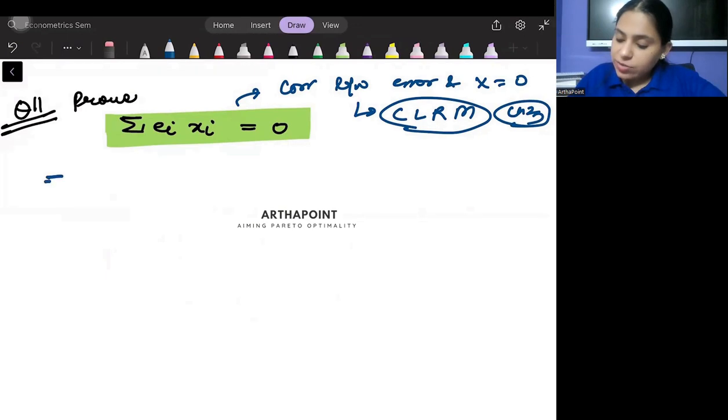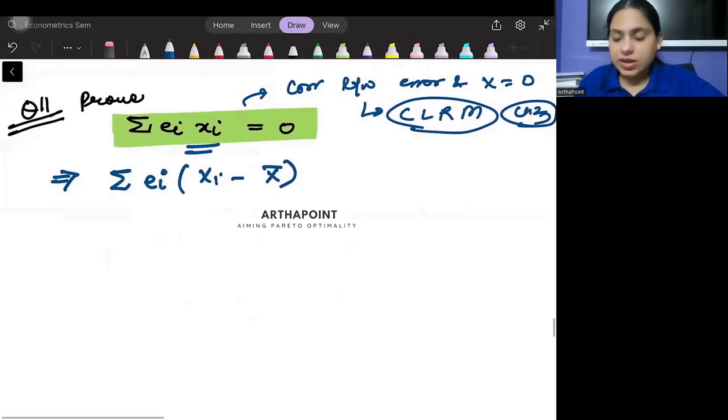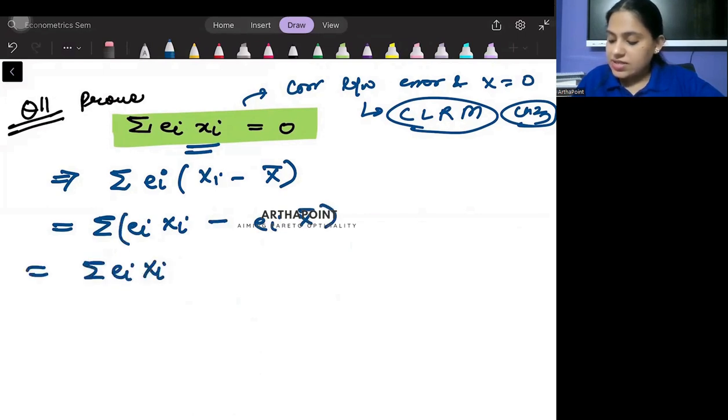Now just try to think about it. So ∑ei*xi is nothing but Xi minus X̄. This is deviation from mean. So this is nothing but ∑ei*Xi - ei*X̄, which will be ∑ei*Xi - X̄∑ei.